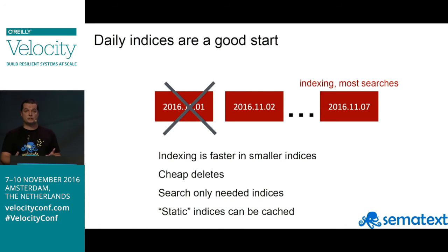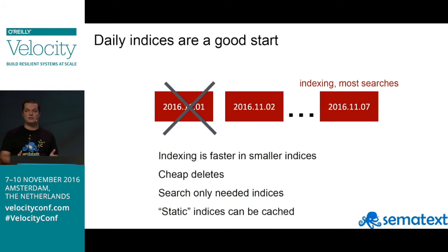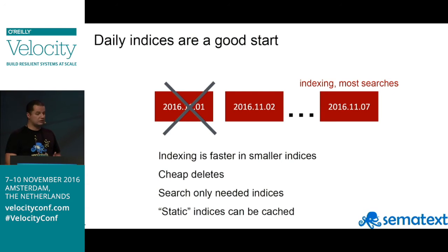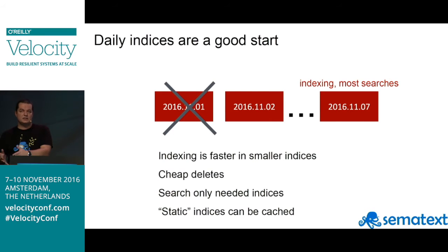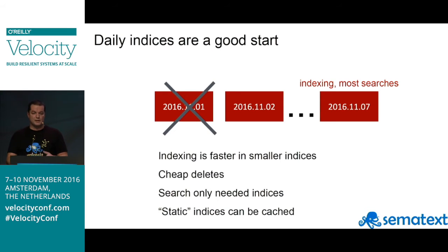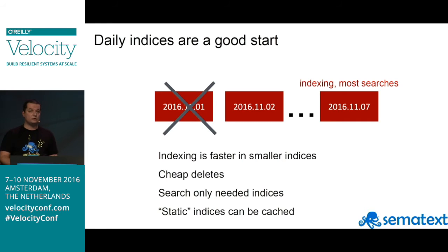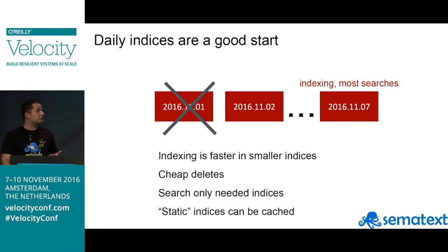When searching, we can say 'search for one week's worth of data,' which means just seven indices — way more performant than searching through all 365 days. Also, those older indices that are not being updated can have some information cached and use a portion of memory to retrieve those cached results, bringing us to more efficient storage overall.